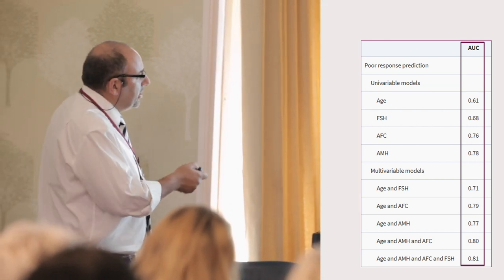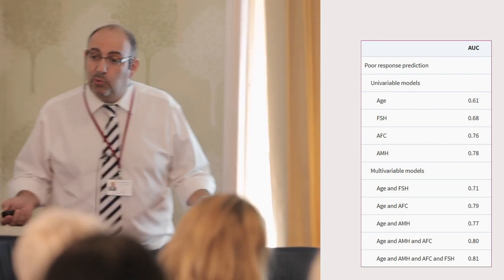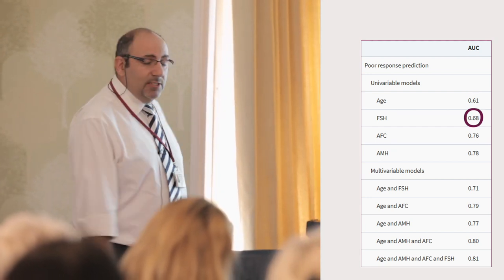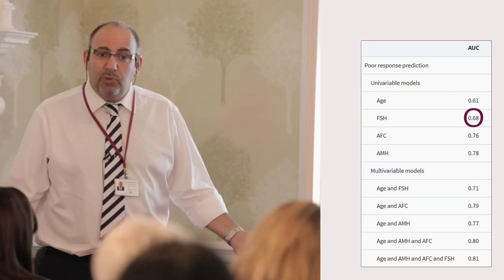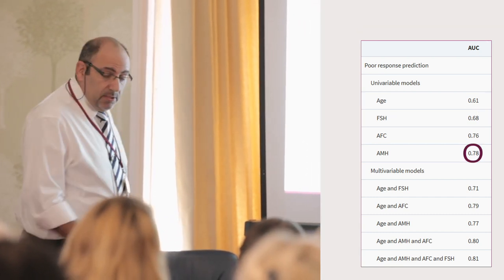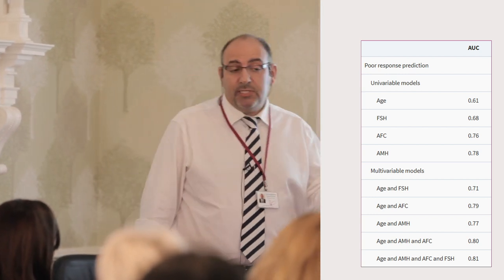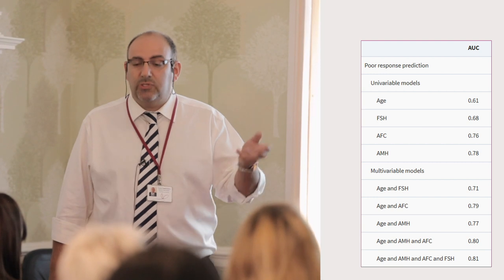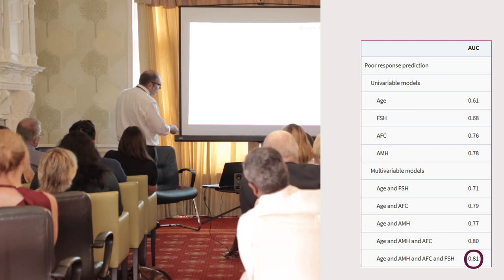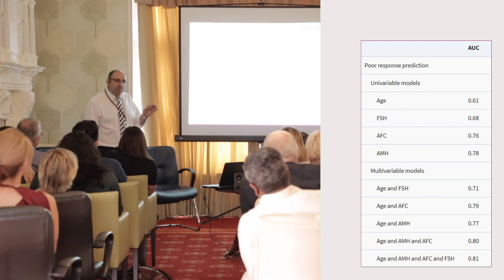Using a woman's age alone gives 60% accuracy in predicting poor ovarian response. Using FSH takes that a little higher to 66%. Using AMH does better still — 80% accuracy for predicting whether we're at risk of not getting enough eggs. Interestingly, combining age, AMH, antral follicle count from a scan, and FSH together doesn't really improve on AMH alone. So just having the AMH will do.